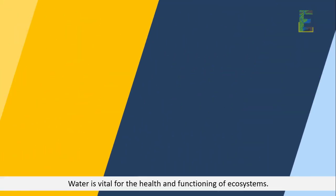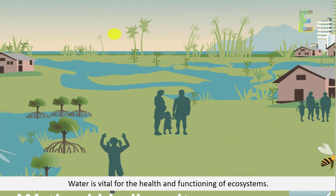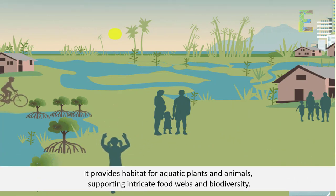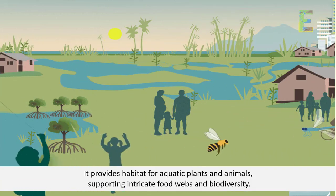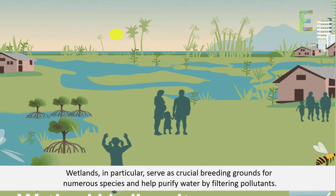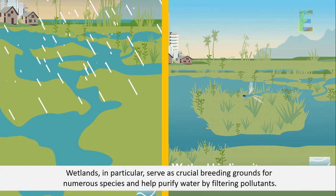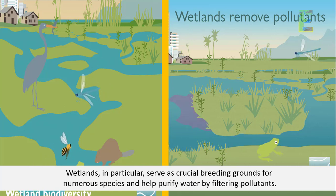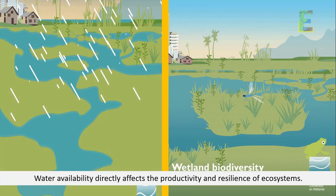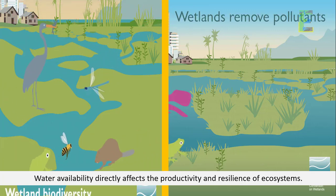Water is vital for the health and functioning of ecosystems. It provides habitat for aquatic plants and animals, supporting intricate food webs and biodiversity. Wetlands, in particular, serve as crucial breeding grounds for numerous species and help purify water by filtering pollutants. Water availability directly affects the productivity and resilience of ecosystems.